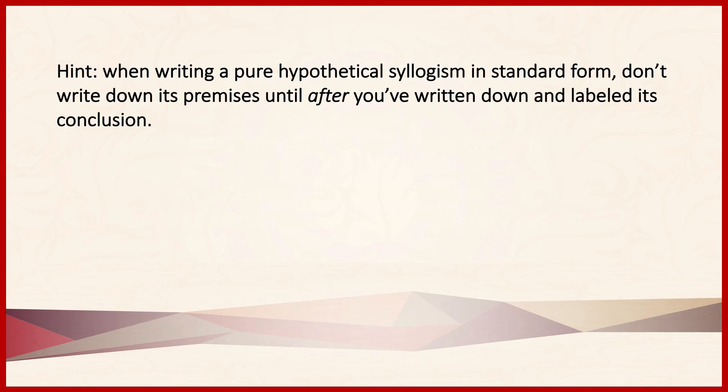In other words, write down its conclusion first, always label it if P then R, then find the premise that contains the P, write it, label it, and then write the other premise. If you do so, you'll find that you'll always have one of the four forms that are listed in the table in the chapter.